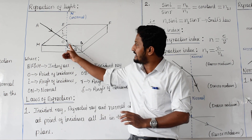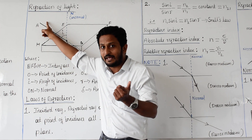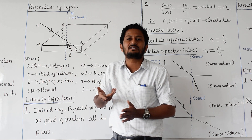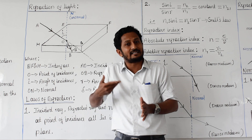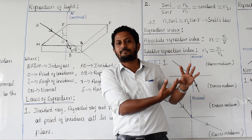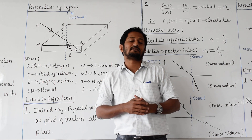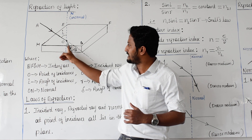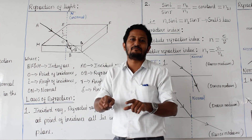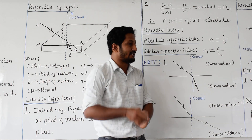Speed of light is more in air and less in glass. So air is the rarer medium and glass is the denser medium. That is why the light ray bent towards the normal — it moved from rarer (air) to denser (glass). Because it lost speed, the light tried to occupy the shortest path, which is possible only by bending towards the normal.